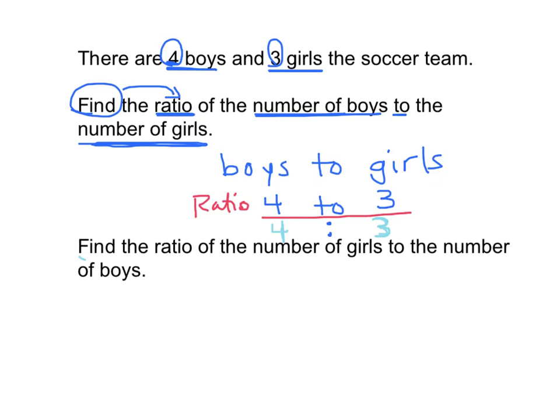Find the ratio of the number of girls to the number of boys. Now that word 'to' tells us we're going to put either the word 'to' there or the colon. The number of girls is our first number that we have to go with. So girls is three. I'll write a three. And then the word 'to' and the number of boys. The number of boys is four. So the ratio of girls to boys is 3 to 4.